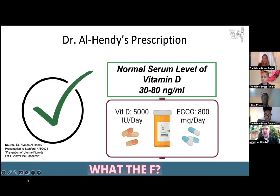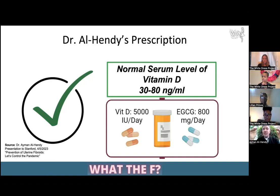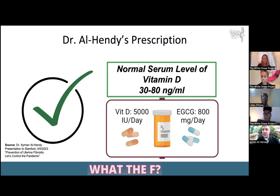Regarding vitamin D — any form of vitamin D, D3 or D2, because they actually convert in the body to each other. 5,000 international units of vitamin D, any form, over the counter. The target is to keep your vitamin D serum level between 30 and 80 nanograms per milliliter. 5,000 is what we found usually gets you there, but I would still encourage you to work with your provider or nurse practitioner to measure your vitamin D level. You might have to adjust the dose a little to get to that range. The closer to 80, the better the effect on fibroids.